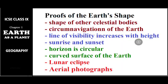Hi everyone, welcome back. In the previous video we concluded the shape of the earth, and the shape of the earth is somewhat spherical — we'll call it an oblate spheroid. Now moving on to the next topic: proofs of the earth's shape, meaning what proofs do we have to suggest that the shape of the earth is spherical.